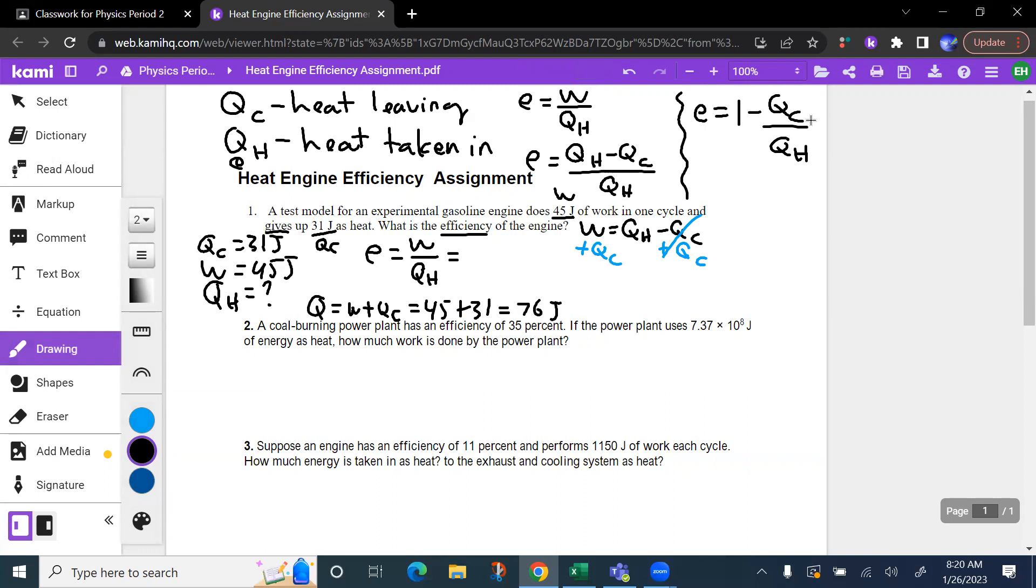Now we can go ahead and take 45 joules divided by 76 joules, and we'll get the efficiency from that. 45 divided by 76 is 0.59, or we could say move the decimal over twice, 59% efficient. So what that means is, it's 59% efficient, but 41% of that energy is lost to heat to the environment.